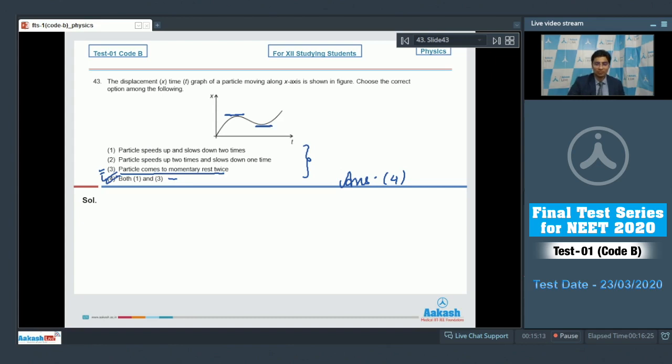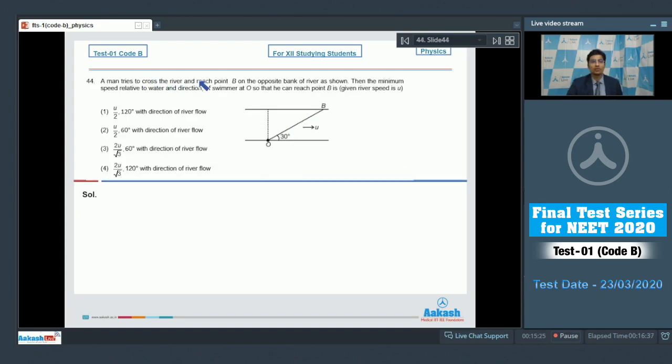Now let us move to question number 44. Question 44 says a man tries to cross the river and reach point B on the opposite bank of the river as shown. Then the minimum speed relative to water and the direction of swimmer at O so that he can reach B is...